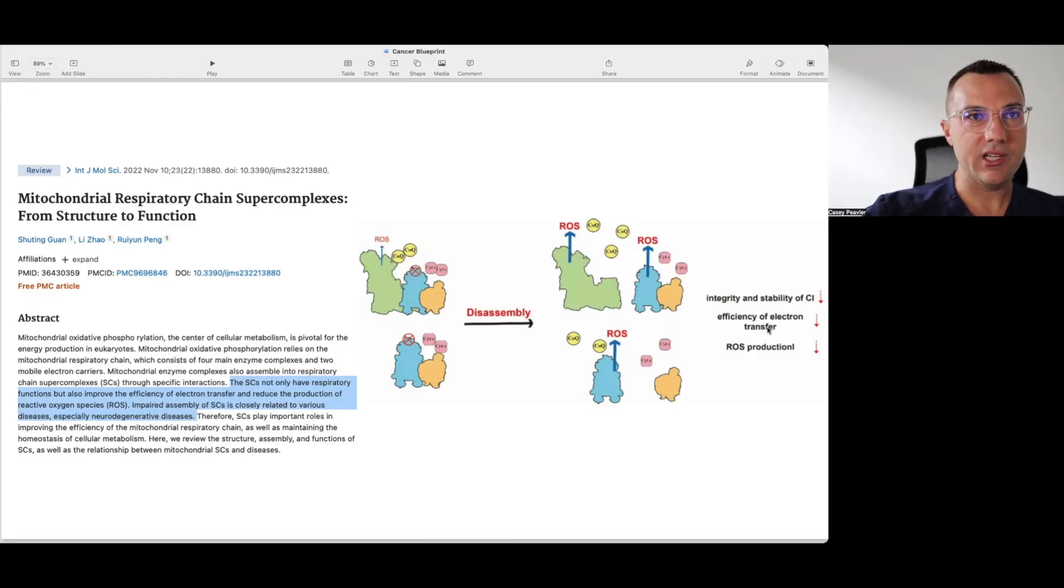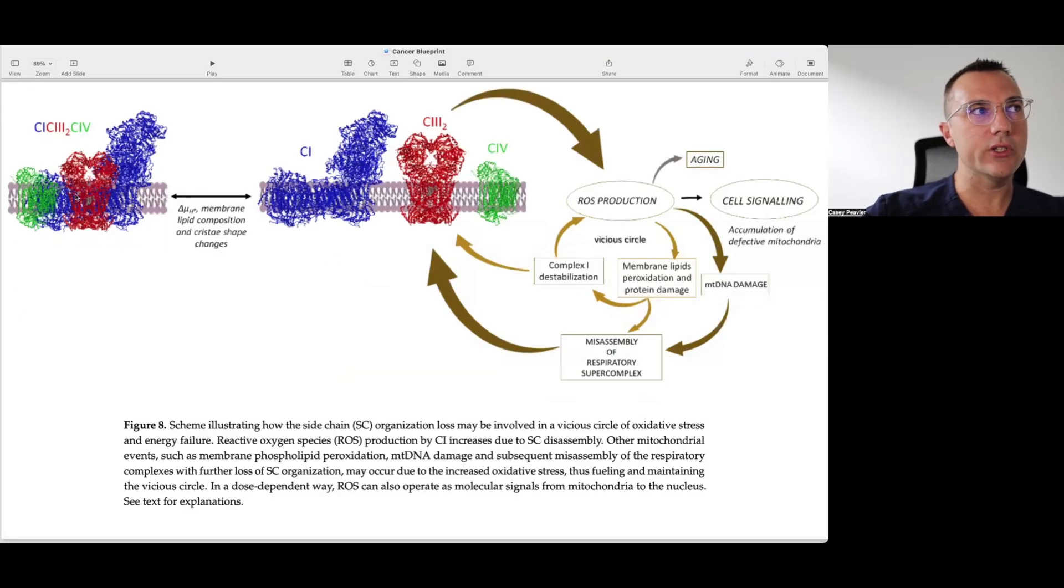But when they're disassembled when these proteins are not aggregated into these super complexes they are less efficient at electron transport and so therefore there is less energy that's being made and there's more electrons that are being lost in the form of reactive oxygen and reactive nitrogen species which is a form of oxidative stress and this becomes a vicious cycle. Because when we lose the integrity of the super complexes and there's reactive oxygen species that are created that then damages the membranes that then damages proteins along here and it also damages mitochondrial DNA which then leads to the misassembly of the mitochondrial super complex and it leads to a vicious cycle.